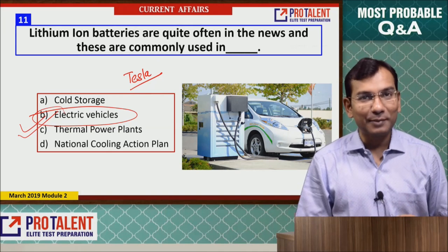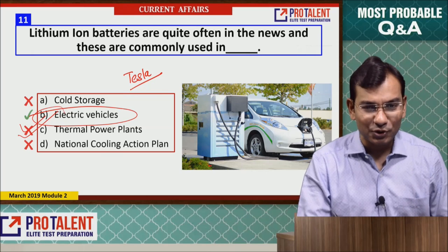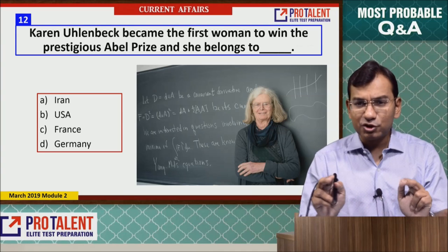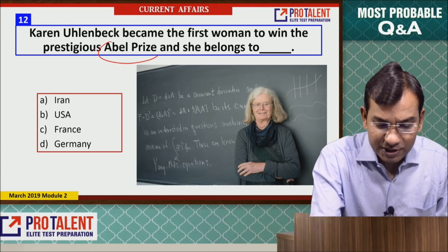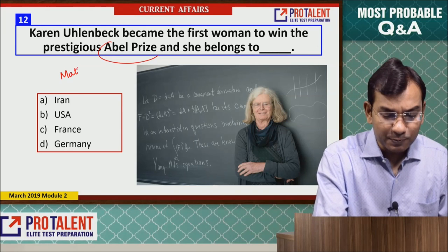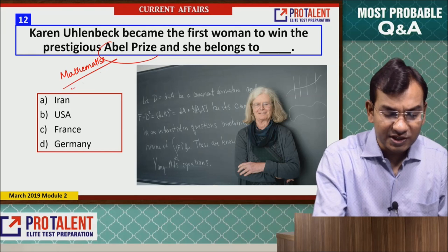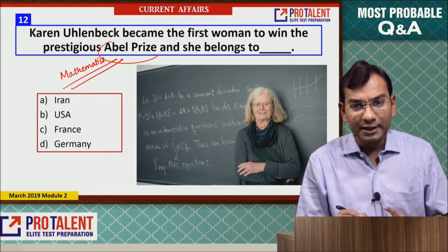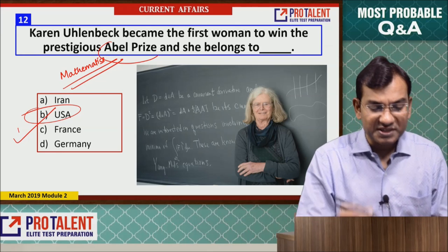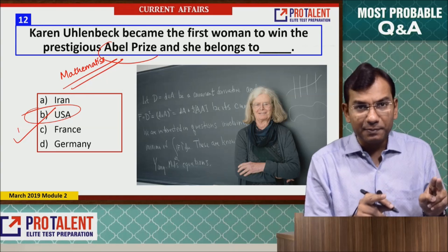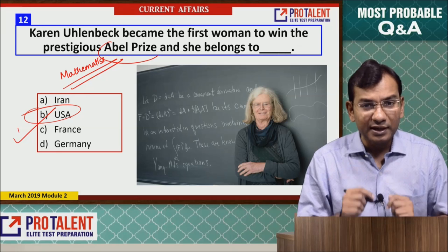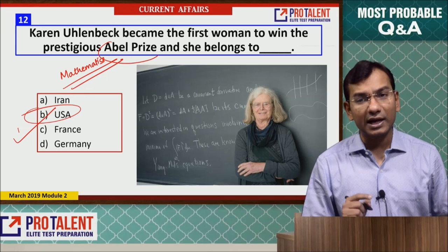Question 12: Karen Uhlenbeck became the first woman to win the prestigious Abel Prize. The Abel Prize is awarded for Mathematics. She is from the USA, and for the first time in the history of the Abel Prize, a woman has received this award.